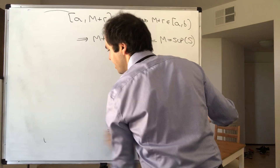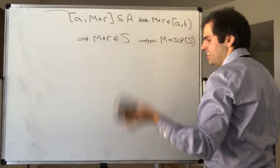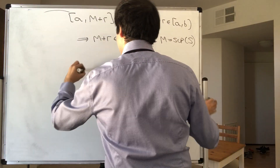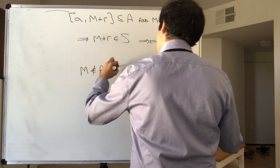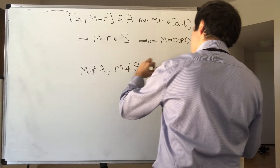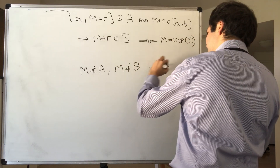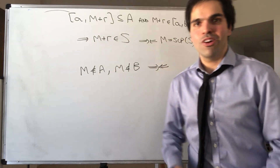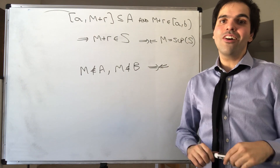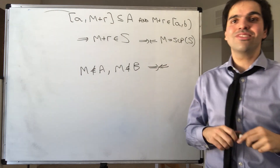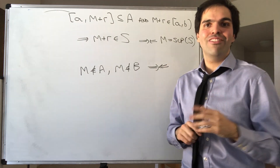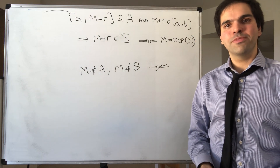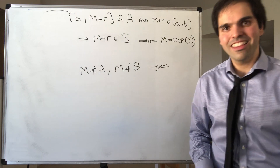Therefore, what we get is M is not in A and not in B, and that's a contradiction. So A union B cannot be all of ℝ, completing the proof that ℝ is connected. Not as trivial as you might have thought. But if you like this and want to see more math, please make sure to subscribe to my channel. Thank you very much.